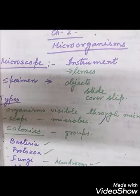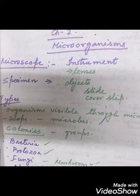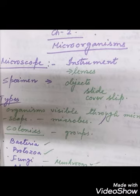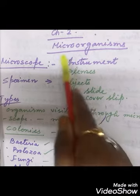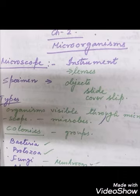Hello students, now we will start with the lesson on microorganisms. First of all, we have to understand what a microorganism is. The organisms that are visible only through the microscope are called microorganisms, so a microscope is needed for seeing the smaller objects.